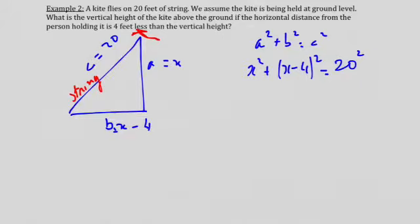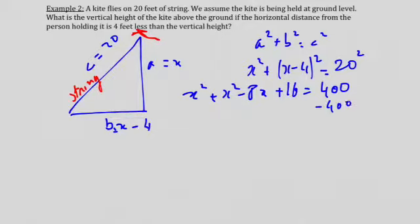When I distribute, I foil my x minus 4 squared. I am going to have x squared plus x squared minus 8x plus 16 equals 400. I subtract by 400 both sides.